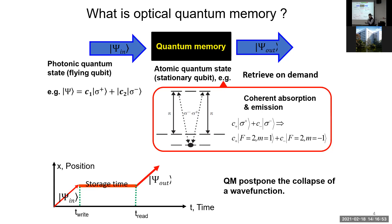So what is optical quantum memory? Basically it's a device that can convert the photonic qubits into stationary atomic system and then retrieve on demand sometime later. It's a device that can postpone the collapse of wave function for quantum memory.